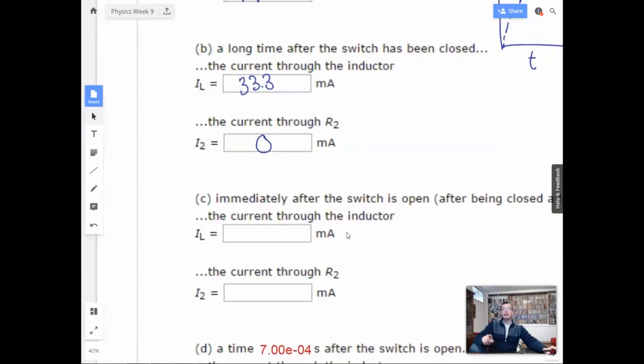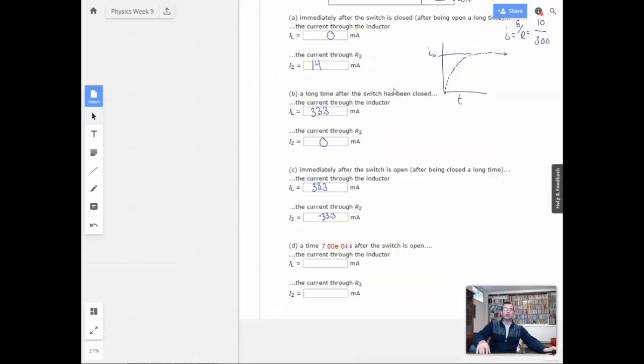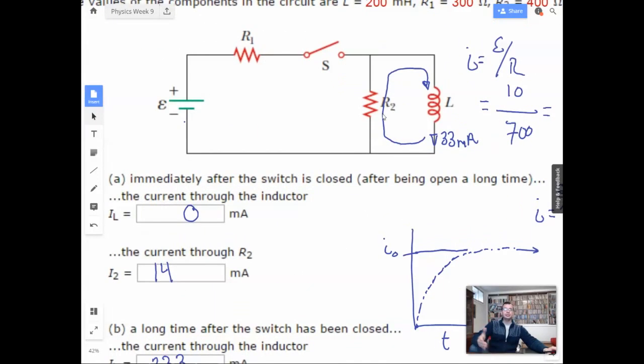It's going to push that current then through this other resistor. And before when they said consider down being positive or whatnot, that's what we're talking about, this part right here, because we're going to have current moving upwards in the picture. So that's going to be a negative going through R2. So we're going to have 33.3, no change, right there.